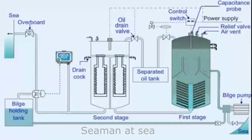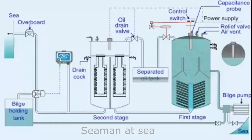Oil from the top of the chamber is automatically drained to the oil tank when the level reaches the bottom of the sensor, as shown. The oil drain valve from the top of the first stage separator is a diaphragm-controlled piston valve. Control air is supplied to the diaphragm through a solenoid-operated pilot valve.